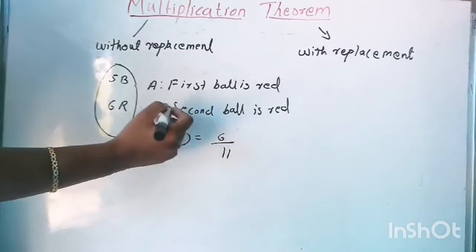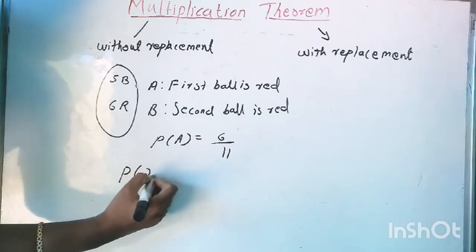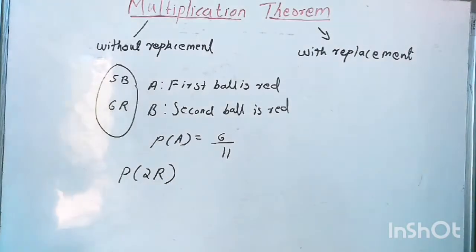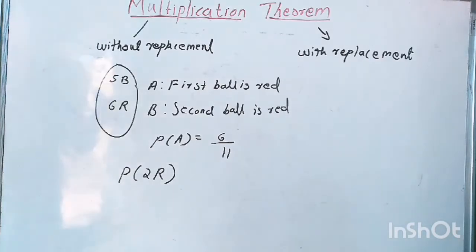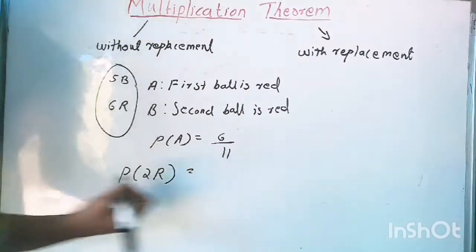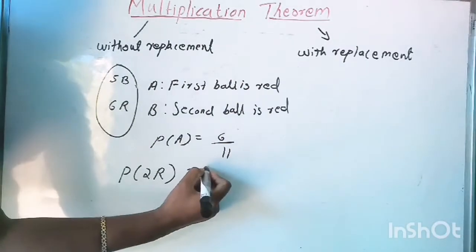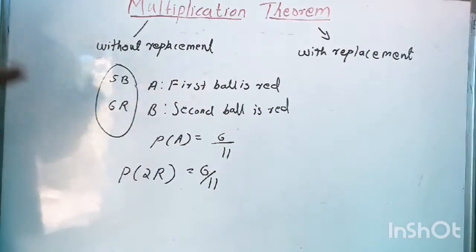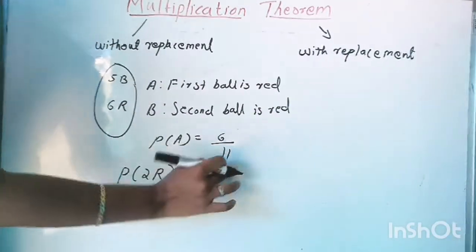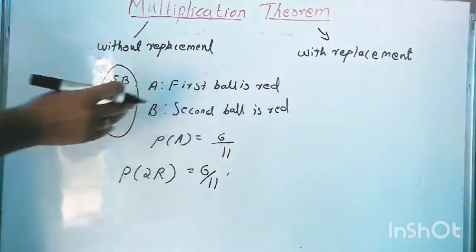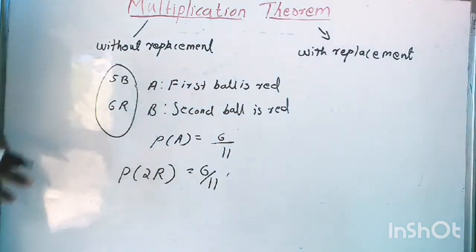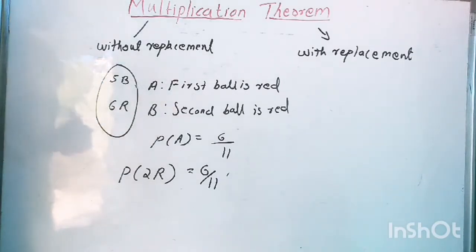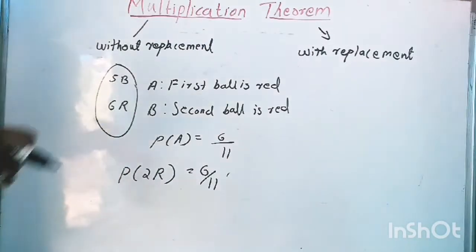Now, suppose we need to get two red balls. That means the first ball is red and the second ball is also red. The first ball being red has probability six by eleven, that is P of A. Now, the second ball is red — we took one ball and we are not going to put that ball again into the bag, because this is without replacement.